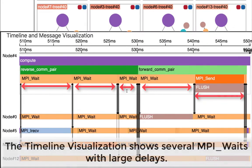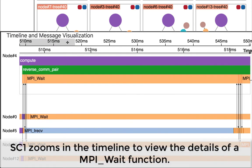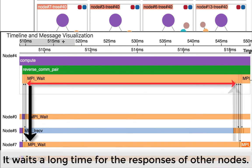SC1 switches to the timeline visualization. He notices that there are several communication delays of the functions. By zooming in to a delayed function of MPI wait, he learns that it waits a long time for the responses of other nodes.